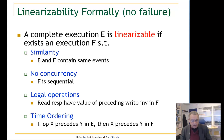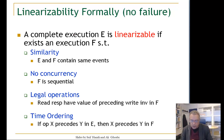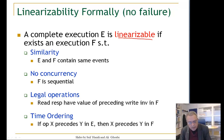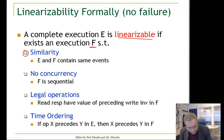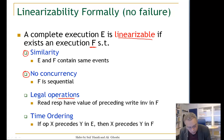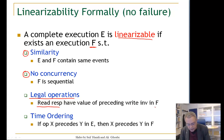Now let us define linearizability formally. A complete execution E is linearizable if we can find another execution F such that: E and F contain the same events — all responses and invocations are the same — F is a sequential execution, and in that sequential execution each operation follows its semantics, meaning a read response returns the value of the preceding write invocation in F on the same register.